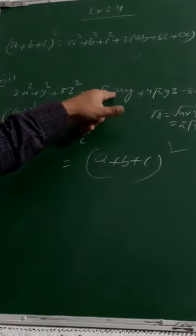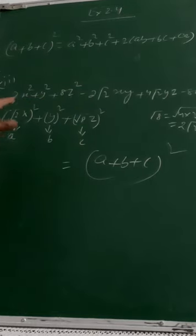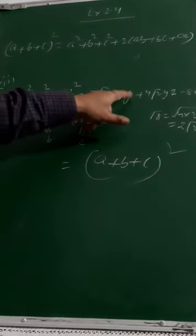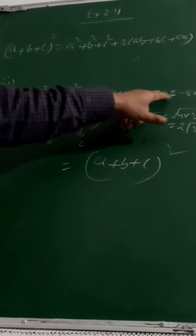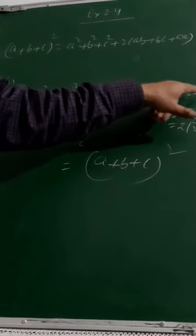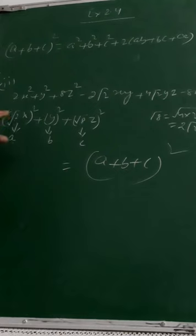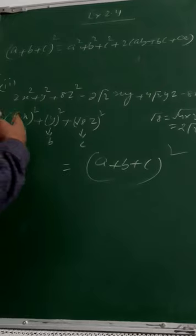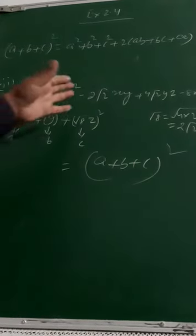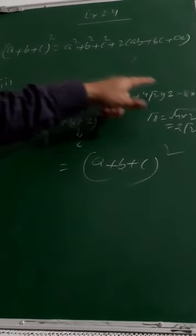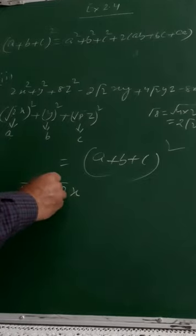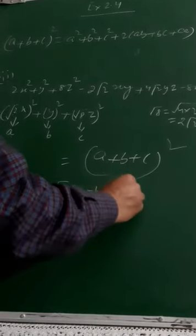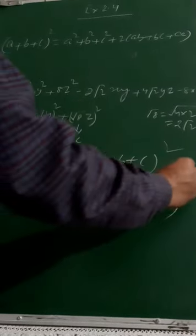Now let us decide the signs. x×y is negative, so either x or y must be negative. If x is negative and y is positive, then minus×plus = minus, so x·y remains negative. y is positive and z is positive, so y·z = positive×positive = positive, no issues. x×z is also negative: x is already minus, so minus×plus = minus. Checking: √2·x × √8 = √16 = 4, and 4×2 = 8xz, which matches.